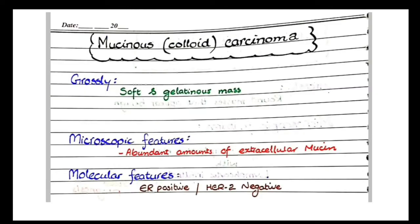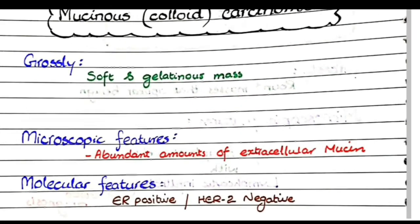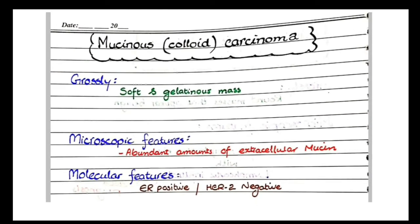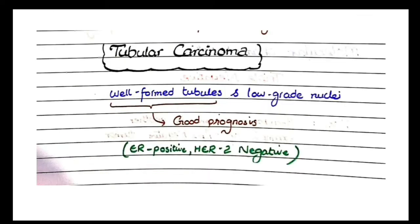Mucinous or colloid carcinoma is another special type of invasive carcinoma. Grossly they appear as a soft and gelatinous mass. On microscopic picture you will see abundant extracellular mucin. On molecular characterization these tumors are ER positive and HER2 negative.